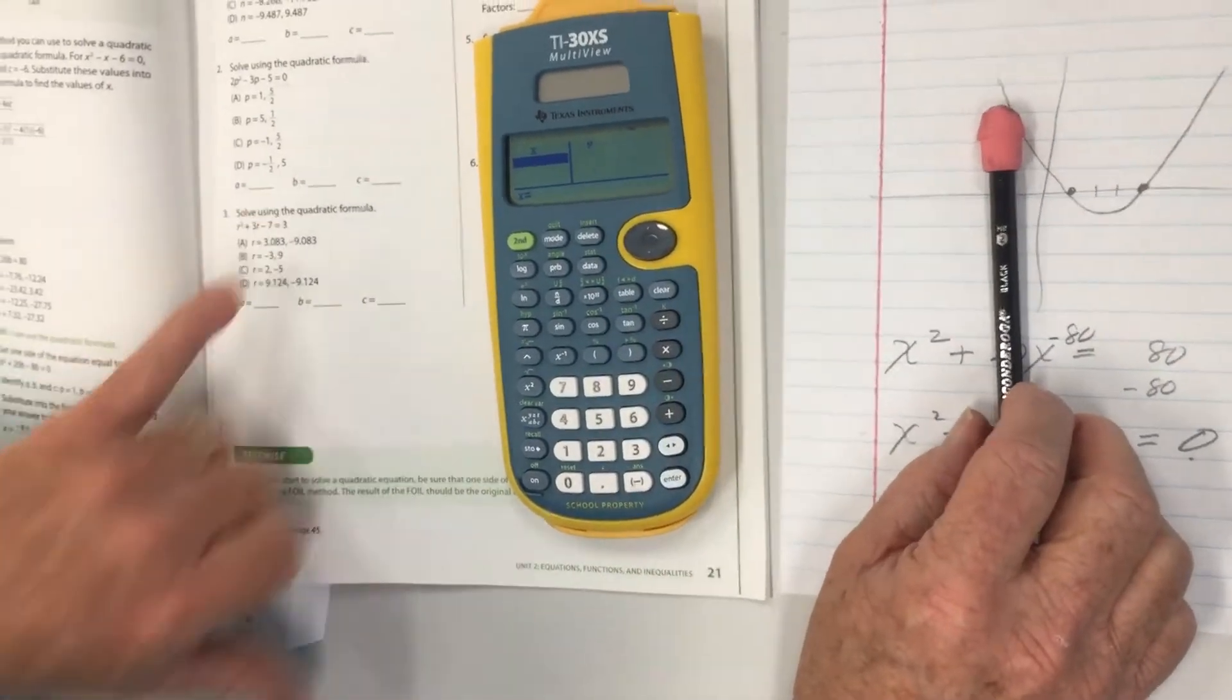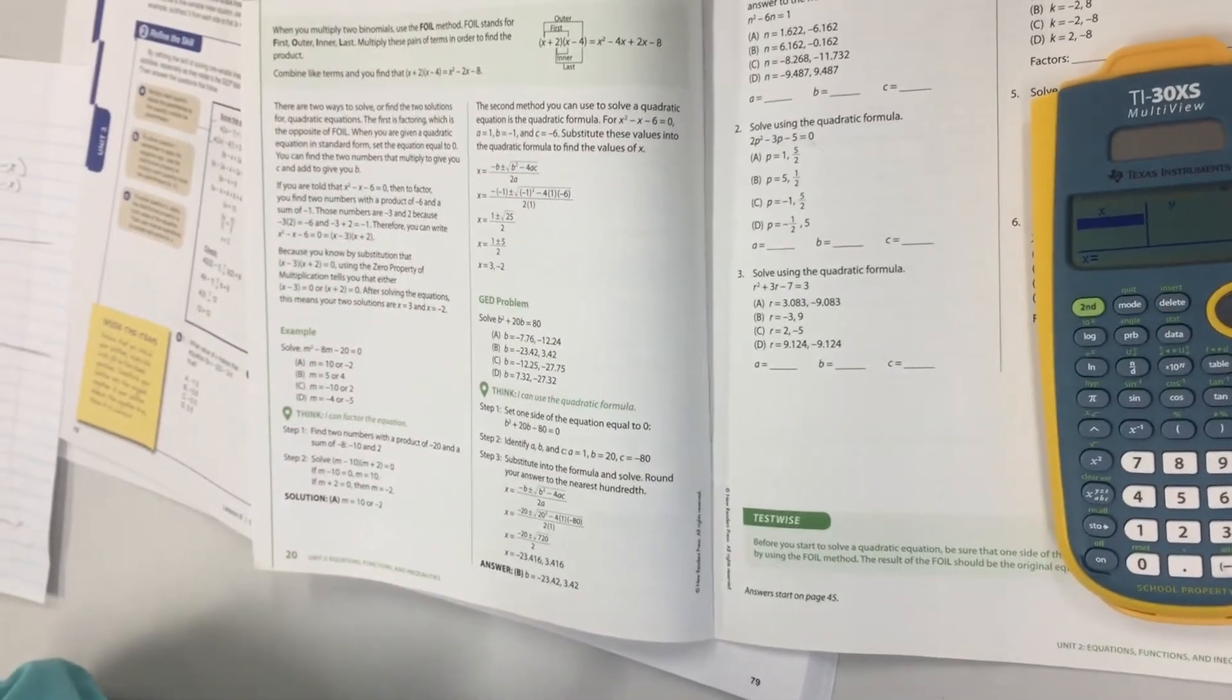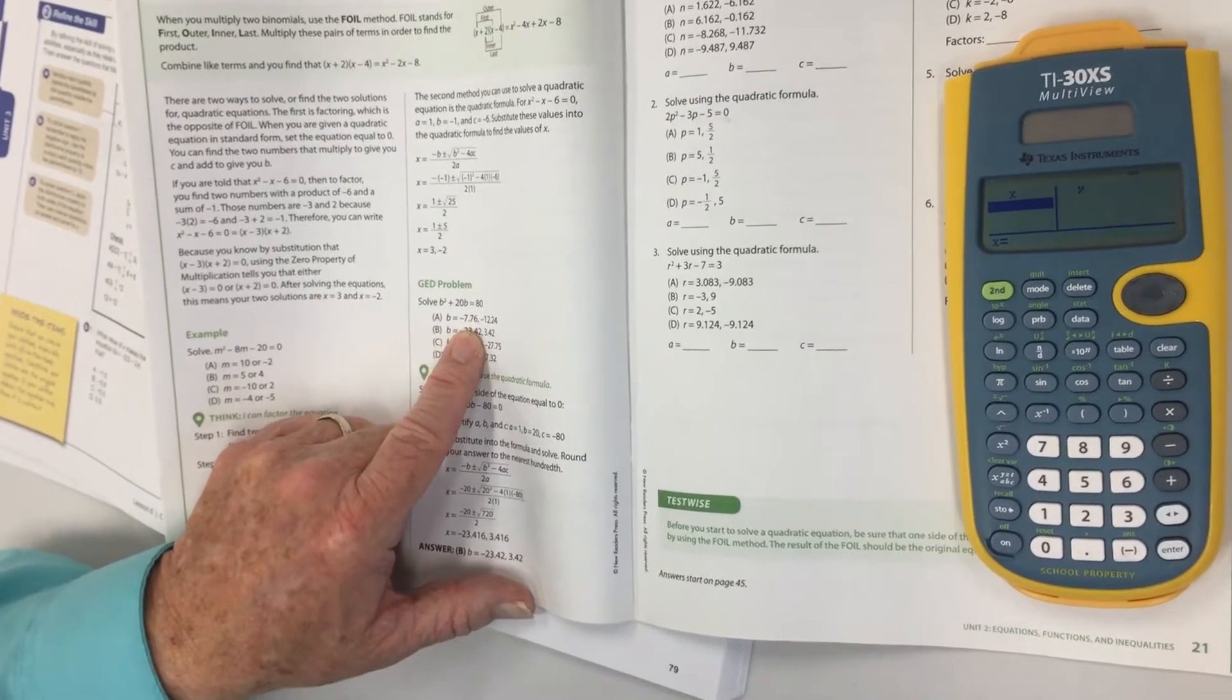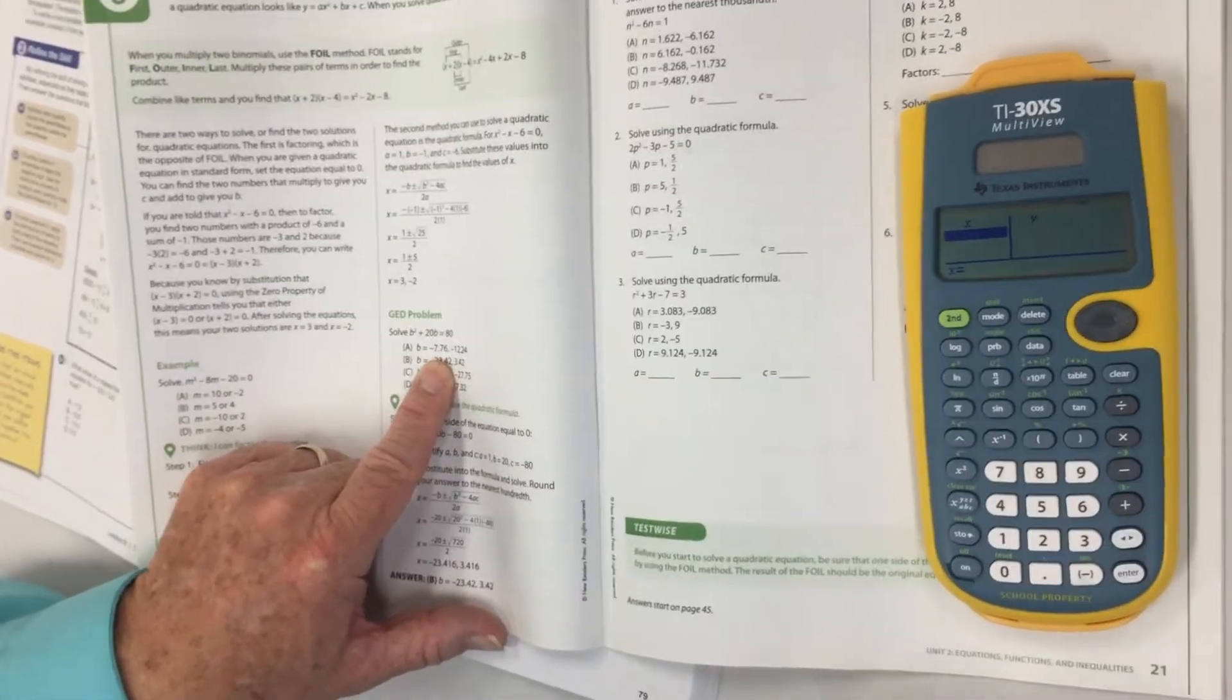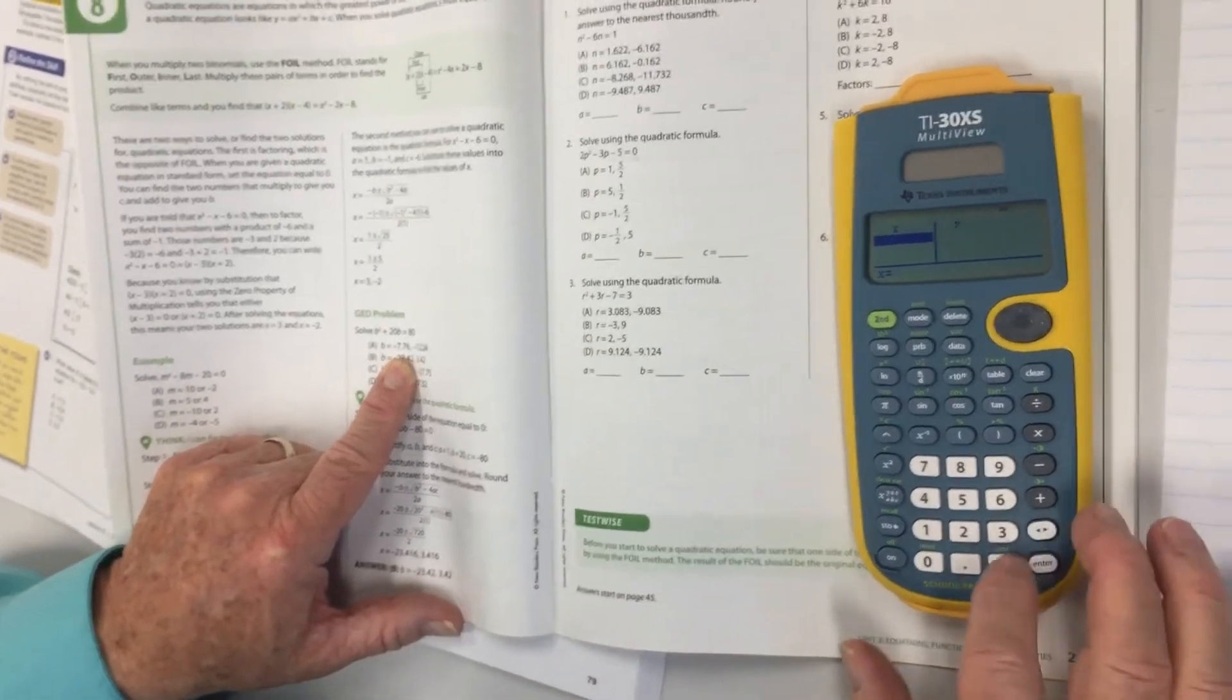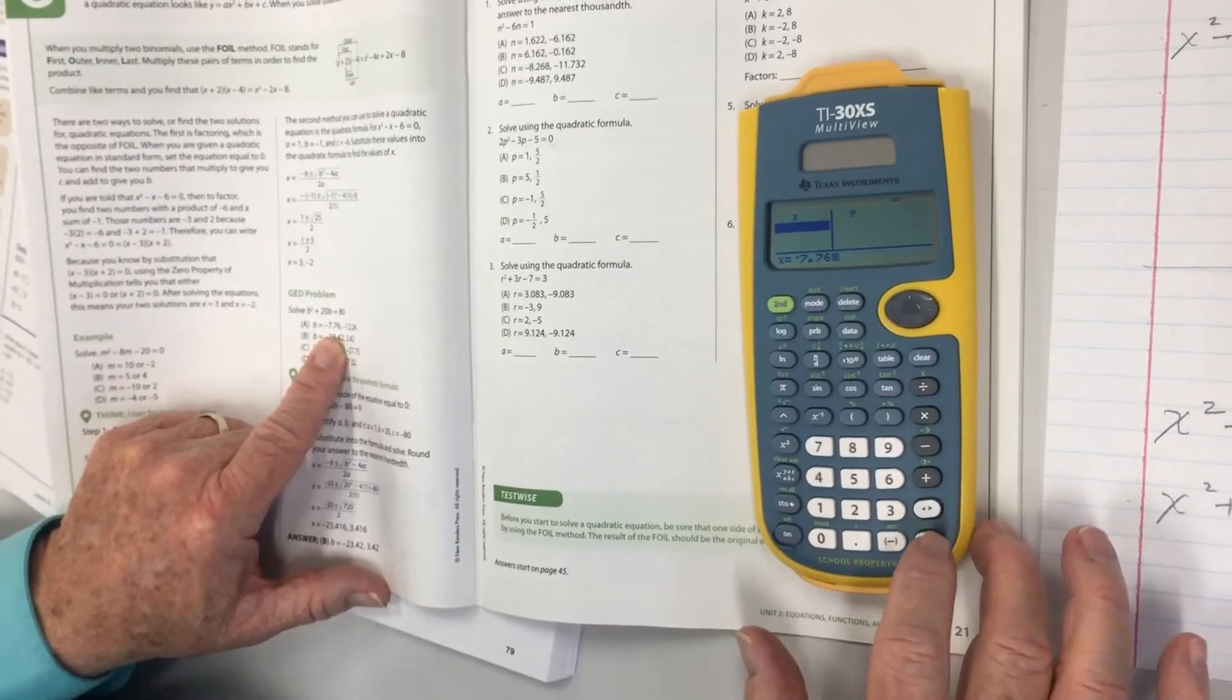So I'm going to go back to my possible answers for that. And where are they? Right here. Okay, here's my equation. So I'm going to start with a negative 7.76. So I'll go to negative 7.76...